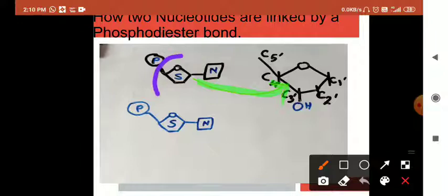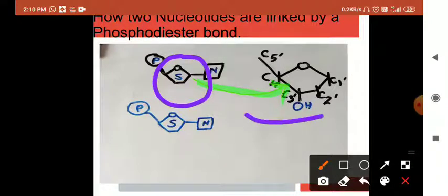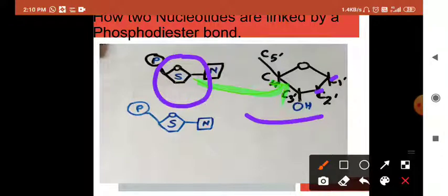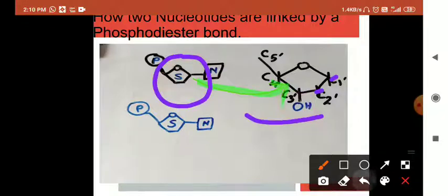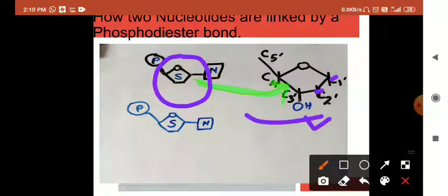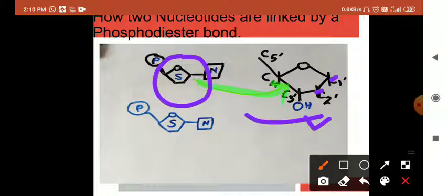This is the sugar molecule. This is shown here. This is C1', C2' and C3'. You will see that OH is present here. In DNA, there is no 2' OH. There is no oxygen from there. But there is 3' OH.